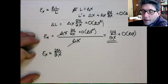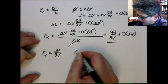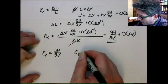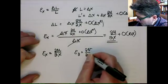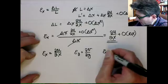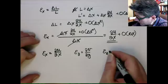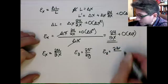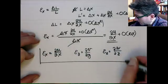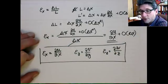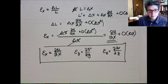You can do the same process for the strain in the y direction and the z direction. The normal strain in the y direction is the partial of the displacement in the y direction, v, with respect to y. And the normal strain in the z direction is the partial of the displacement in the z direction, w, with respect to z. So those are the three normal strains. In the next video, I'll do the shear strains, but I'll stop now.